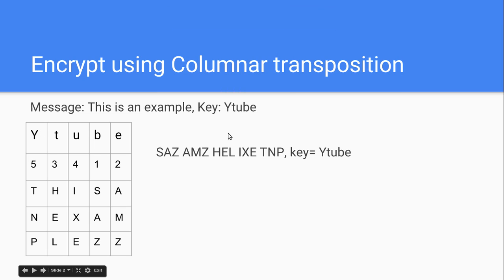The reason I didn't just do U-tube for the key was because you can't have a key that has multiple of the same letter. The word 'U' has a U in it, and the word 'tube' also has a U in it, so I can't do that. Your key has to be all unique letters, because you write that on the top and then you number the letters.